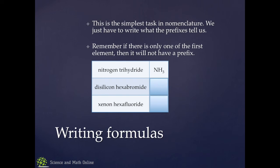Disilicon hexabromide. Di means two, so two silicons. Six bromines gives you Si2Br6. And then xenon hexafluoride, one xenon, six fluorines, and there you have your name.